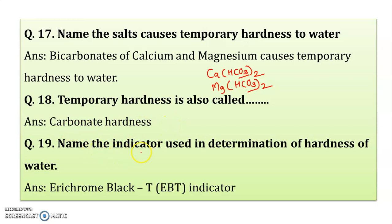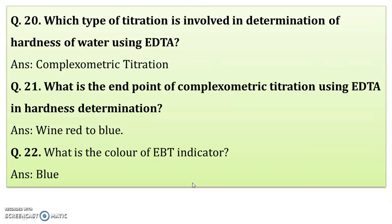Name the indicator used in the determination of hardness of water. Eriochrome Black T — also abbreviated as EBT — is used in the determination of hardness of water. Which type of titration is involved in the determination of hardness of water using EDTA? It is the complexometric titration. Remember: experiment number 1 is redox titration, determination of Cu from copper ore is iodometric, and determination of hardness of water is complexometric titration.